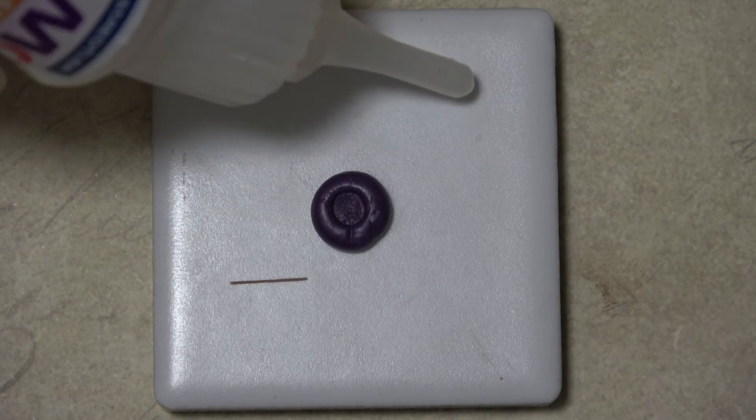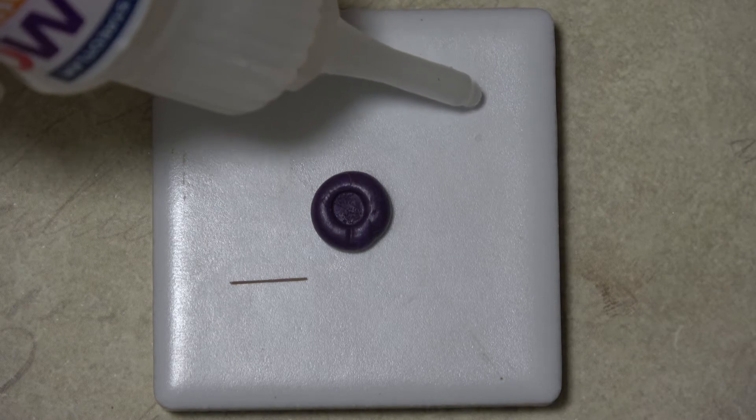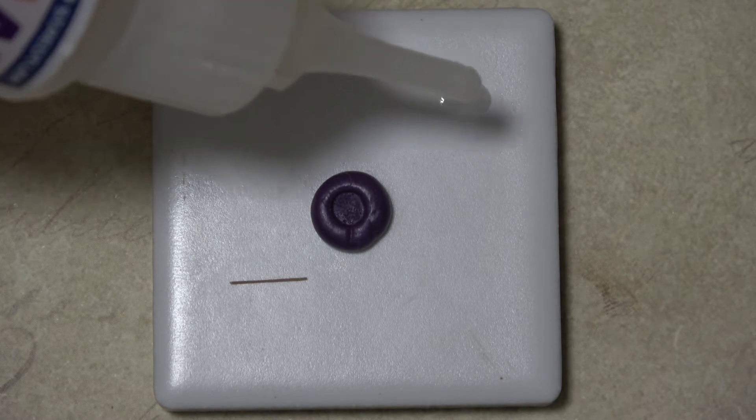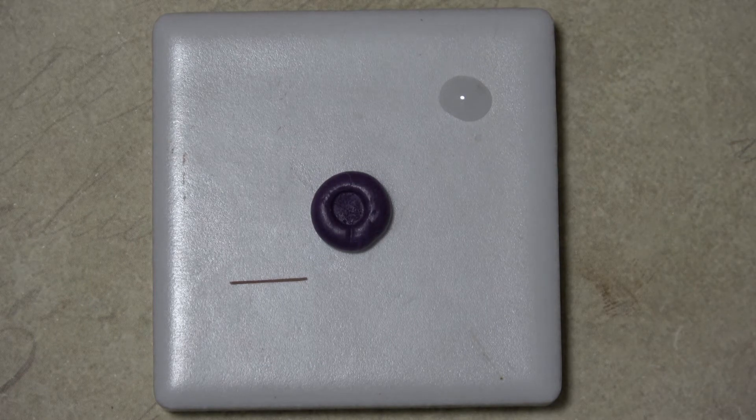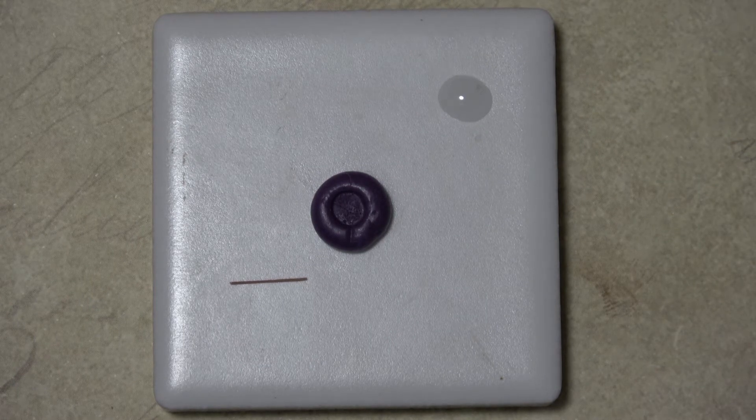Next, blend together some translucent liquid sculpey with some ink to the desired paste. Keep in mind that the more ink you add, the harder this will be to bake.